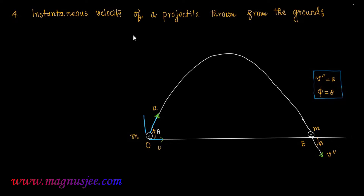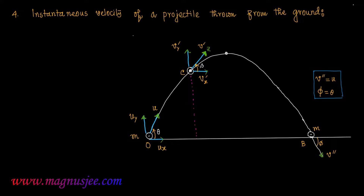We can consider two rectangular components of initial velocity u. Ux is the horizontal component of velocity and Uy is the vertical component of initial velocity of the projectile. We can denote the highest point A and an intermediate point C. At point C the projectile has a tendency to move with velocity v prime along the tangent. We can consider two rectangular components of v prime at point C: Vx prime is the horizontal component and Vy prime is the vertical component. V prime makes an angle beta with the horizontal direction, and CN1 is the perpendicular, which is also the vertical displacement.